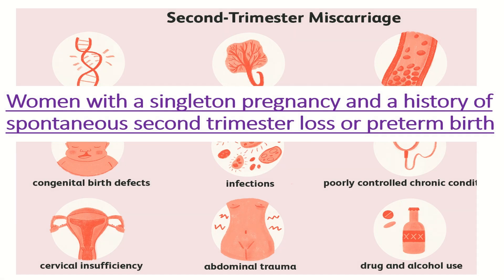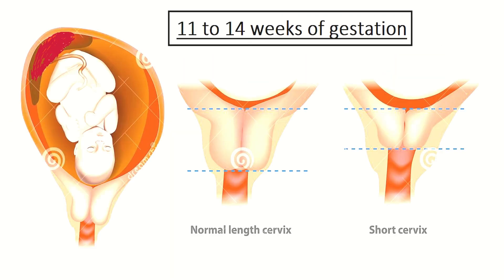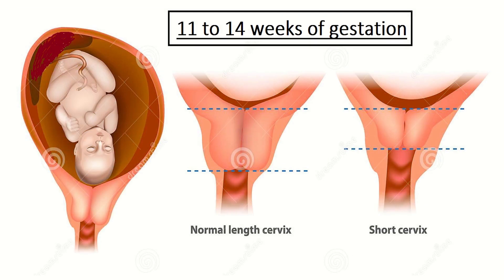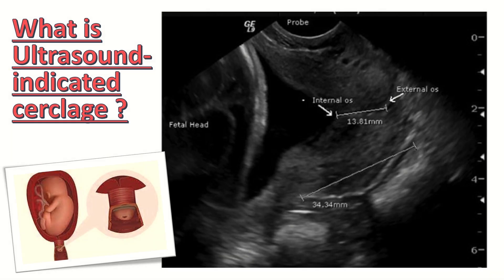Women with a singleton pregnancy and history of spontaneous second trimester loss or preterm birth are offered cervical cerclage. History-indicated cerclage is usually inserted as a planned procedure at 11 to 14 weeks of gestation.